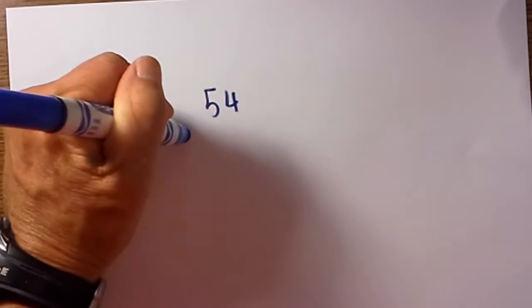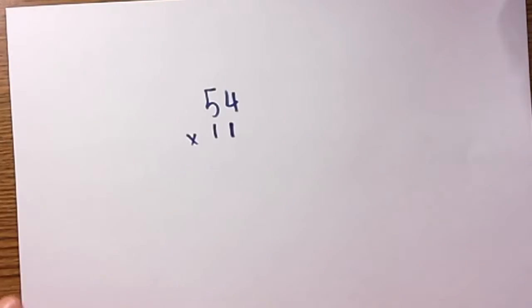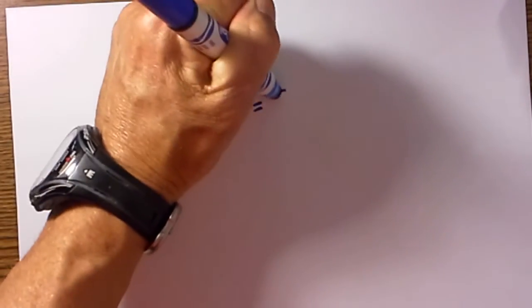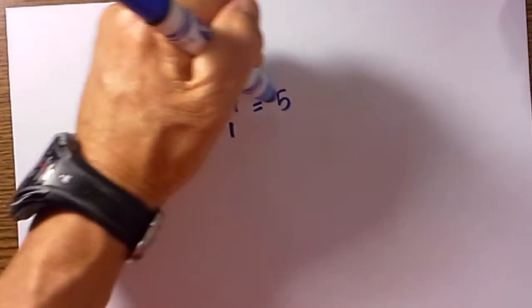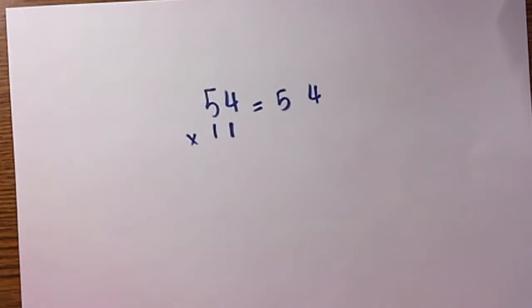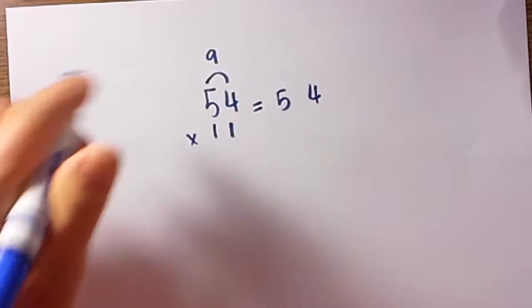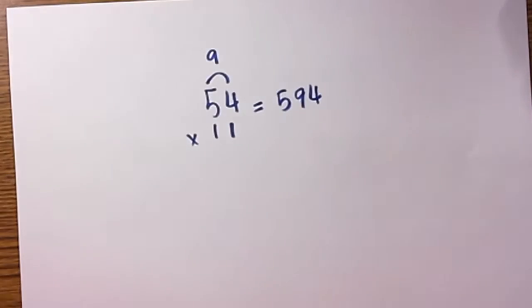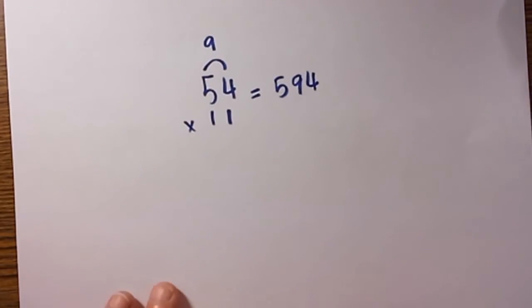Okay, so you have 54 times 11. Here is the trick. The first digit in the answer is 5. The last digit is 4. All you do is add these two numbers together, that is 9. So there is your answer: 594.